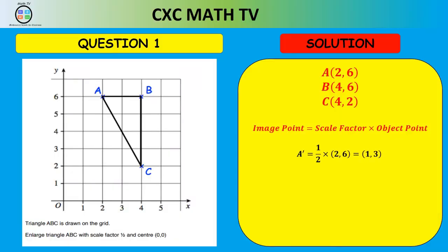B prime is one half times (4, 6), giving (2, 3). C prime is one half times (4, 2), giving (2, 1). We label and connect those points to form triangle A prime B prime C prime — that is the image.